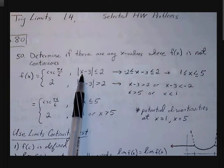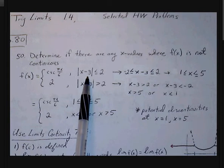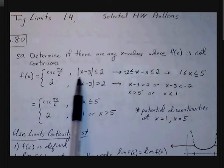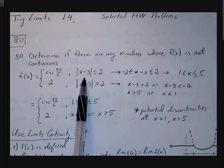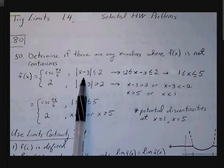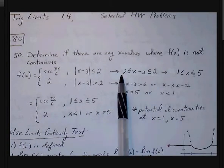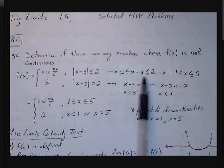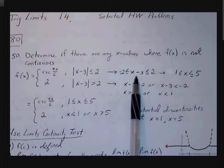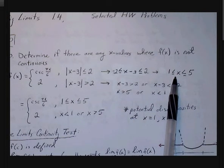We see some absolute value for our interval, so we're going to have to rewrite this so that we can see a little bit better. Any time we have an absolute value inequality, we can write the absolute value of x minus 3 less than or equal to 2 as: negative 2 is less than or equal to x minus 3, which is less than or equal to 2. Then we add 3 to both sides to get x between 1 and 5.